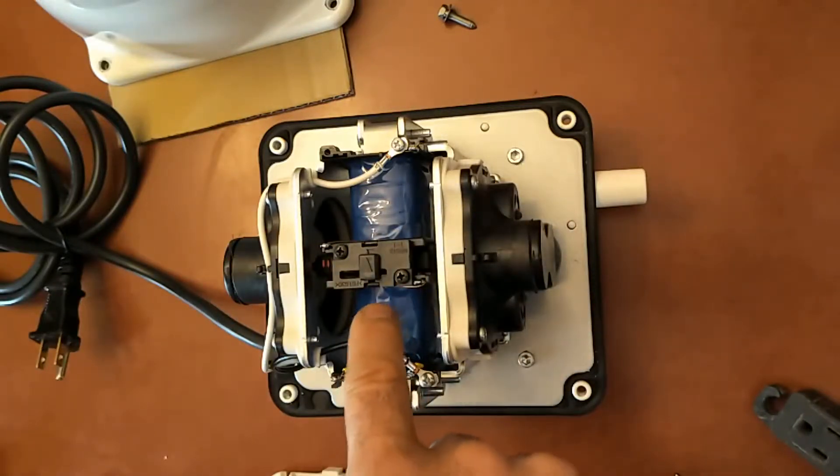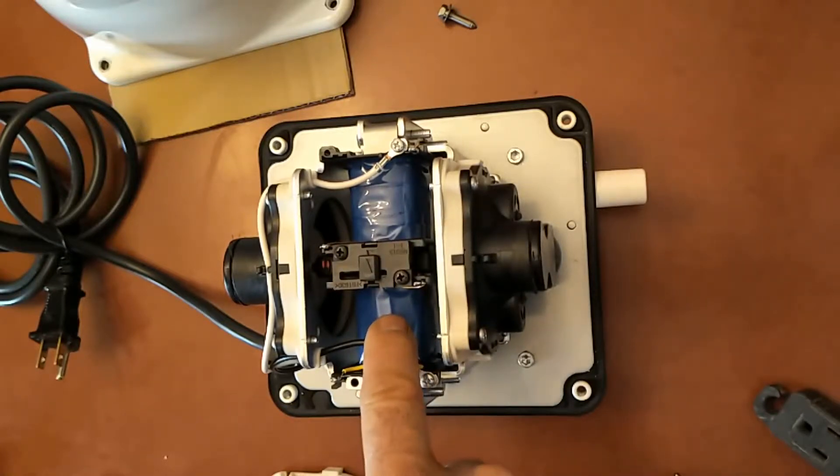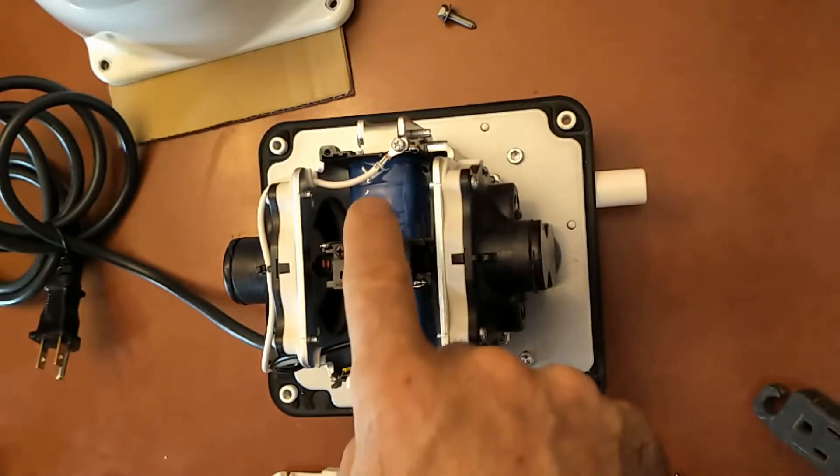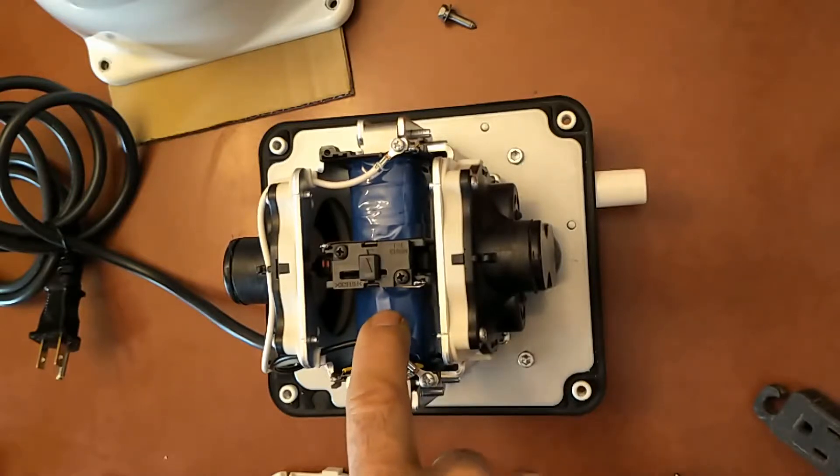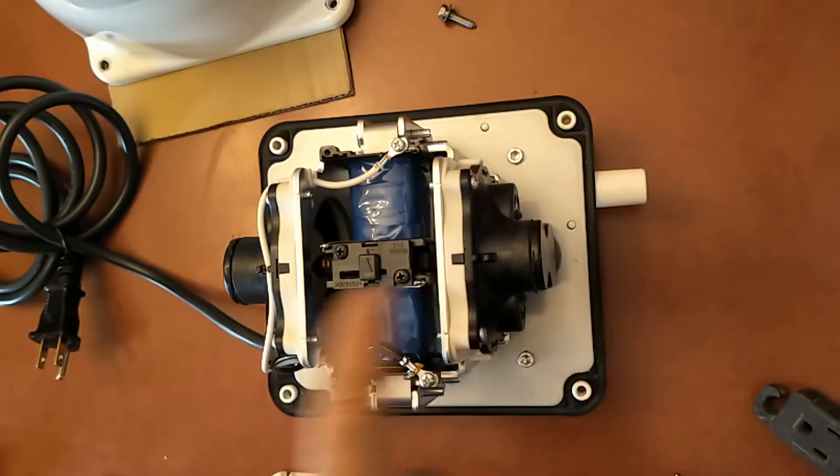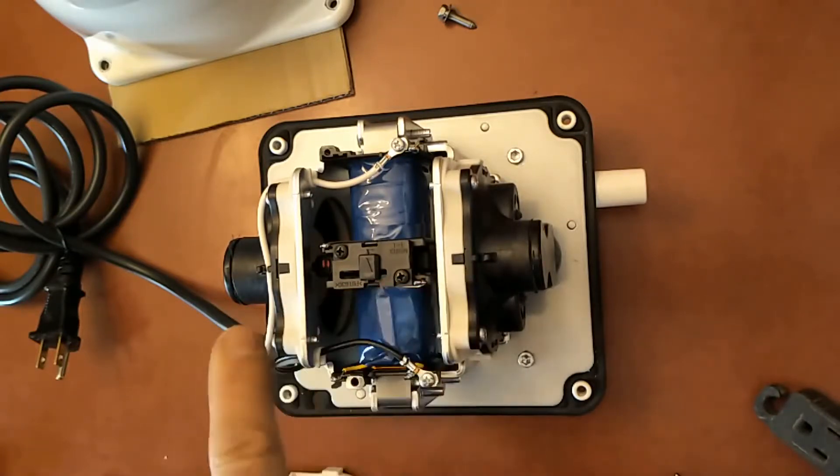The magnet shuttles back and forth because there's an electrical coil on either side. Thanks to our alternating AC current, the coils are constantly reversing polarity 60 times a second. Every time these coils reverse polarity, the magnet is pulled in the opposite direction, pulling the diaphragm with it and creating air movement.